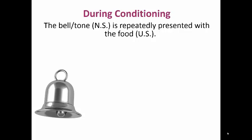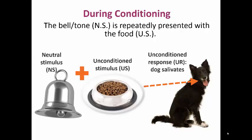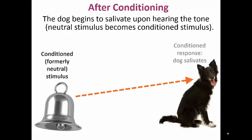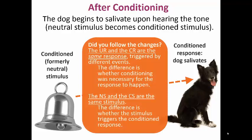During conditioning, we would pair the neutral stimulus repeatedly with the unconditioned stimulus. So you would pair the bell — the neutral stimulus — with the food, the unconditioned stimulus. Every time you bring food, you ring the bell, and we still get the unconditioned response because you're still presenting the food. After conditioning, when the bell rings, the dog automatically starts salivating upon hearing the tone. It's now a conditioned stimulus — what was before the neutral stimulus — and now causes the dog to salivate. The bell has been paired with food, and the conditioned response is triggered by the new conditioned stimulus.